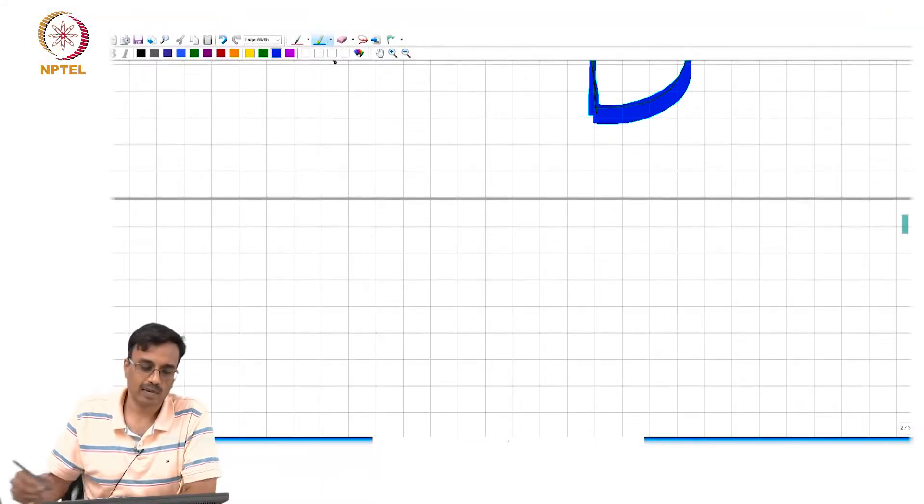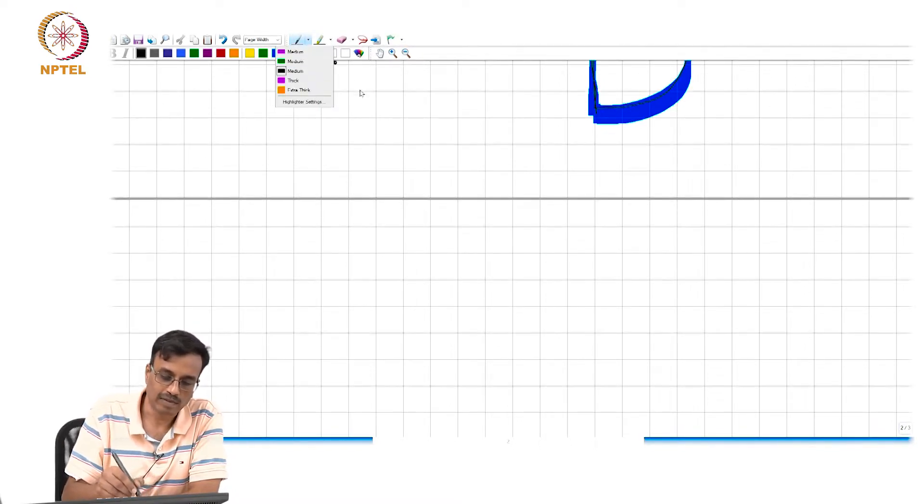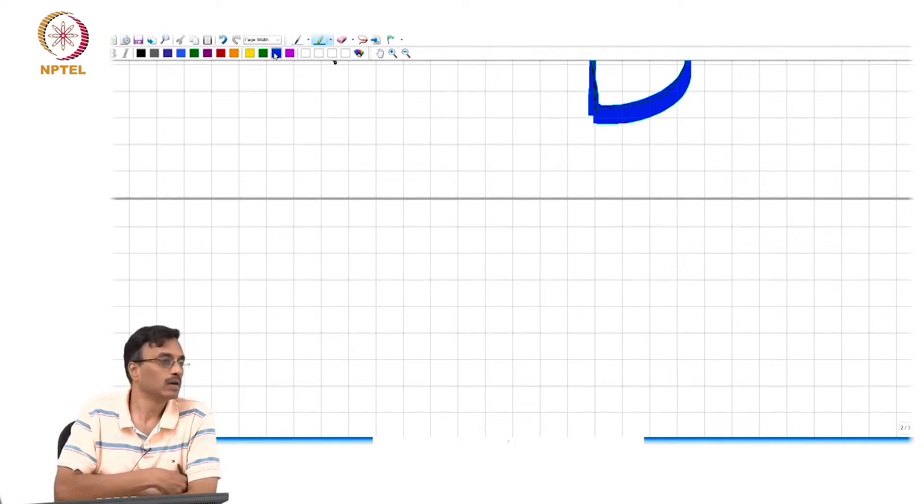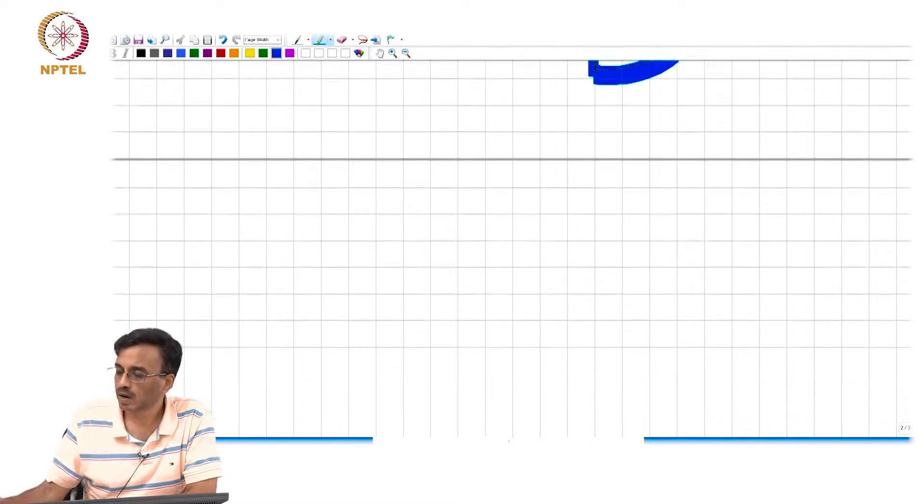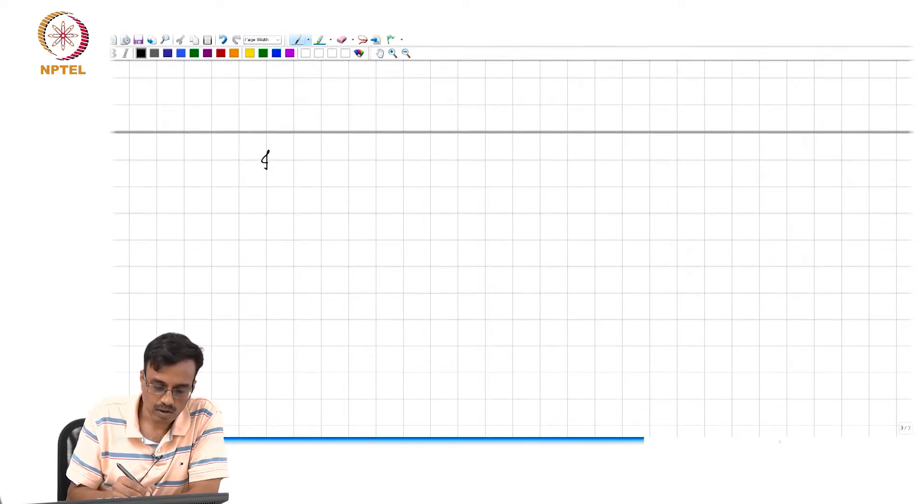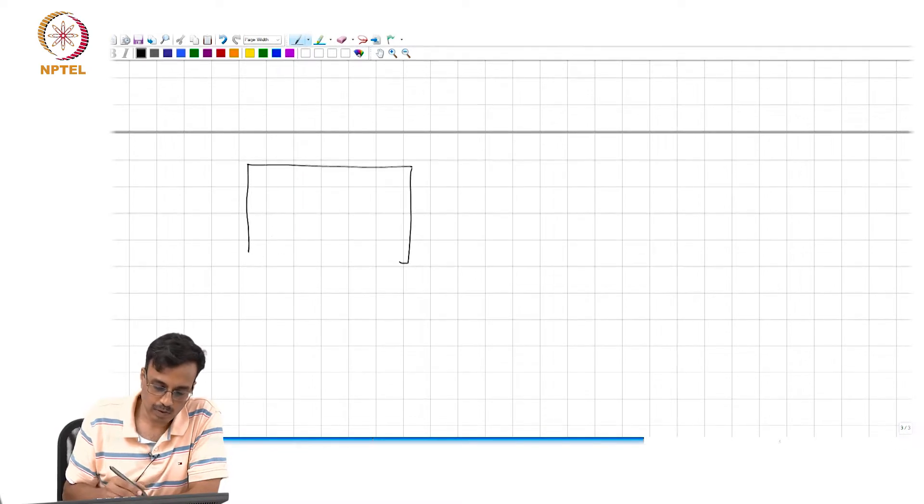The next thing I would like to talk about - this is all I had to say about passive RLC networks. And the next thing I would like to talk about is what happens when you have a big network and you want to simplify the treatment of noise.